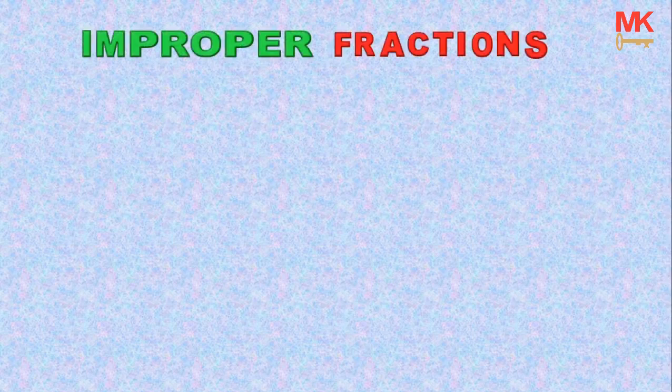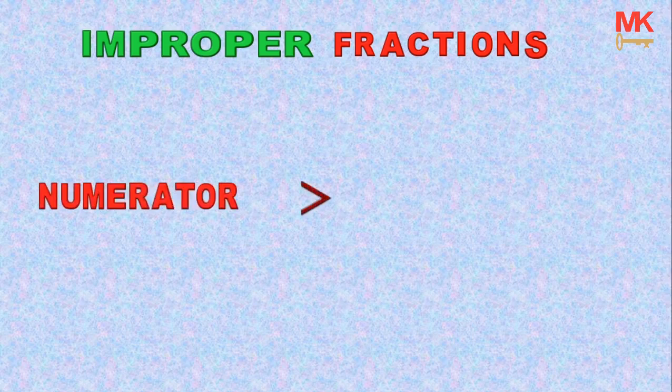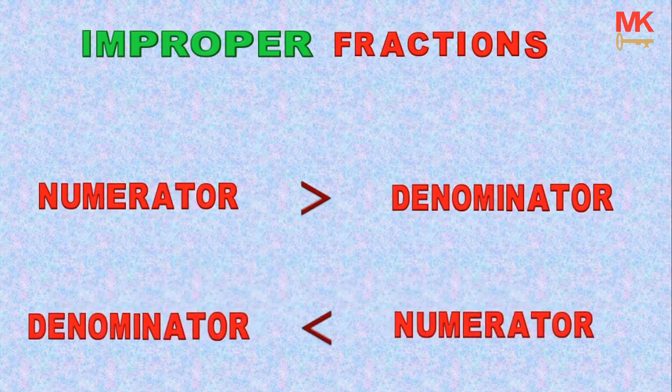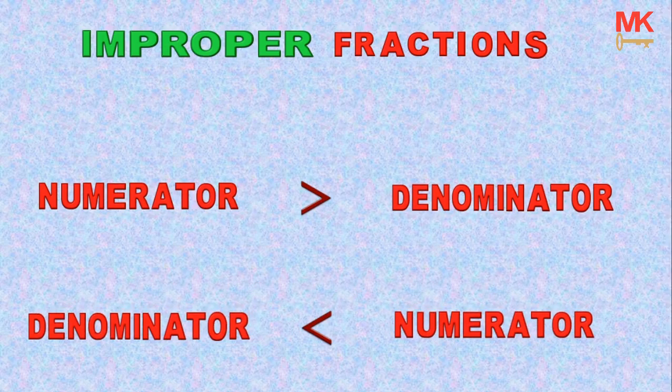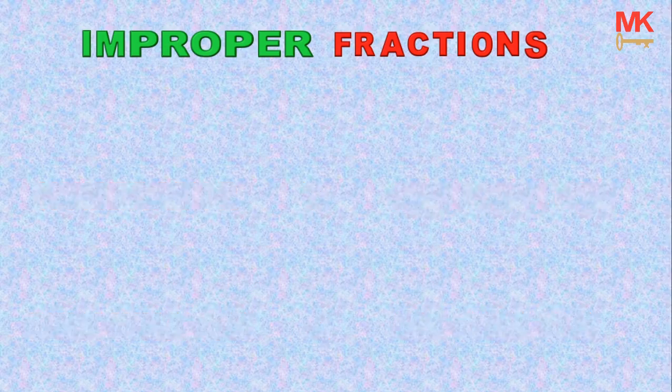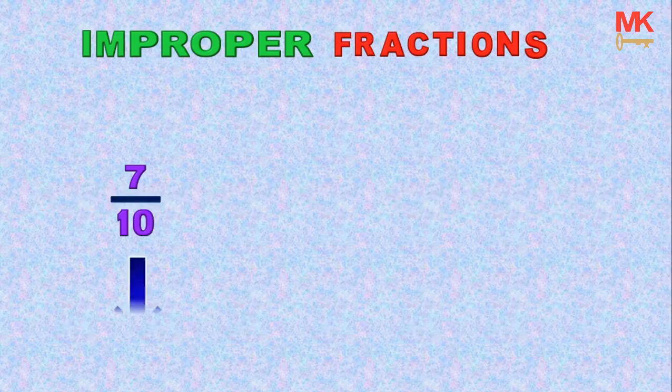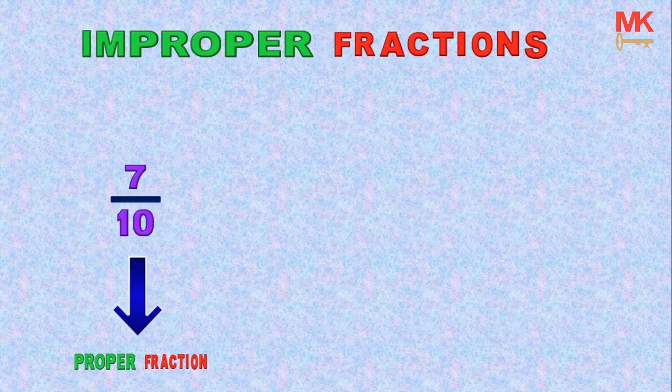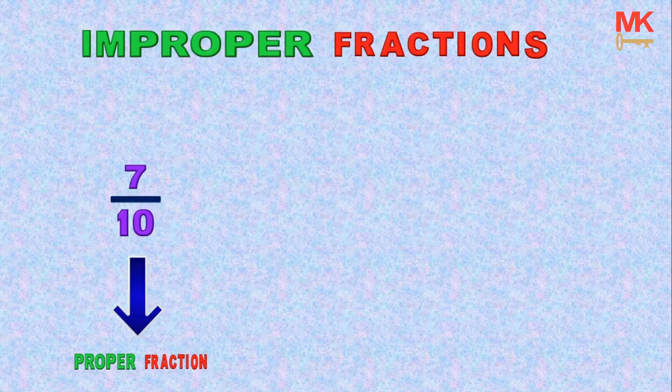So what is an improper fraction? By definition, an improper fraction is a type of fraction whose numerator is greater than the denominator, or a type of fraction whose denominator is less than the numerator. For example, if we consider our former fraction 7 out of 10, which is a proper fraction, we can convert this fraction to an improper fraction by swapping the position of both the numerator and the denominator.